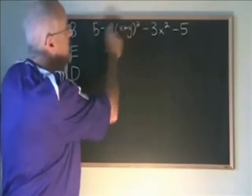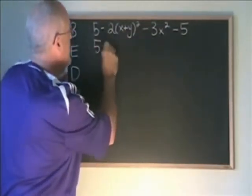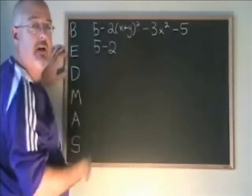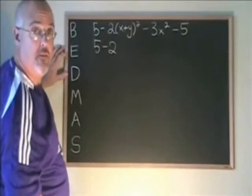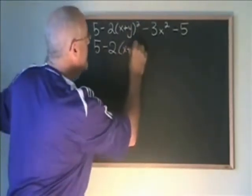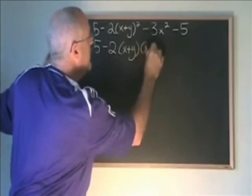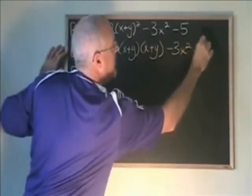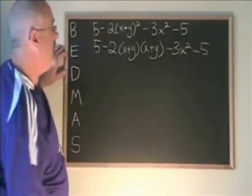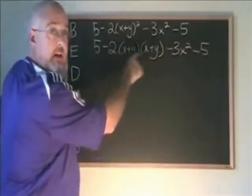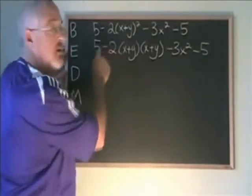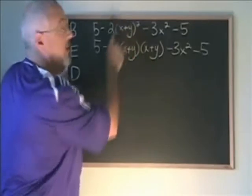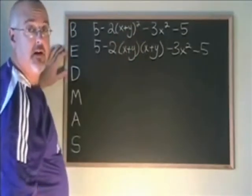The first thing I'm going to do is write the squared binomial as a multiplication so that I can see what I'm doing. But I have to remember, now that it's expressed as a multiplication, I don't do the leftmost multiplication first, because this still represents a squared binomial. It's still an exponent. It has to be done before the multiplication. So I'm going to multiply this using the FOIL and write the answer inside a bracket.